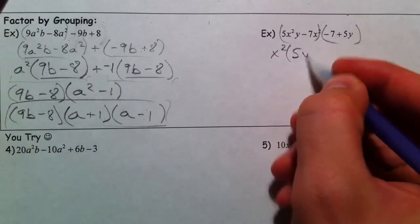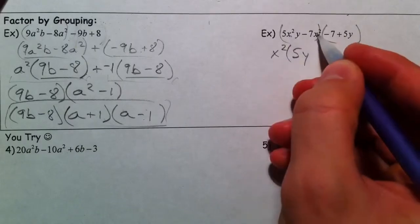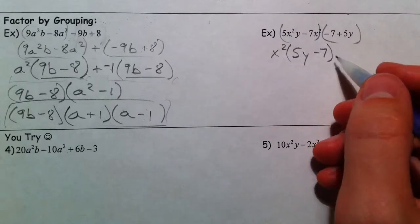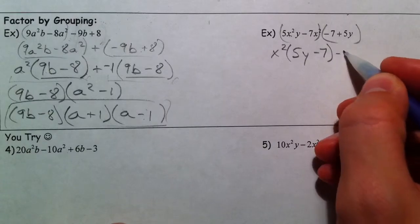We have a 5y left because the x squared is gone, and we have a 7 left. So this one looks very similar. Take out a minus 1, you have a positive 7 minus 5y.